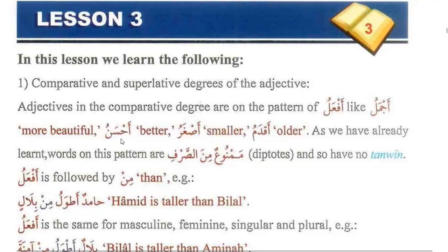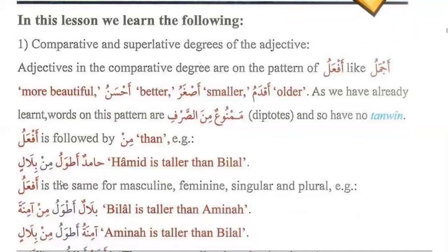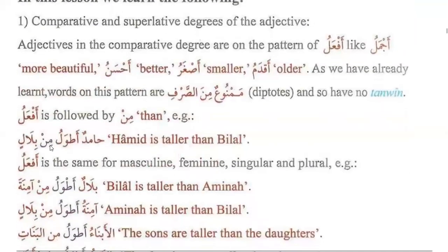Since they are on the pattern of af'alu, they cannot accept the feminine ta. If after a word on the pattern of af'alu — like ajmalu or asgharu — we have the preposition min, then this af'alu is representing comparative degree. If you see the word min after the af'alu pattern, it means it is representing comparative degree.